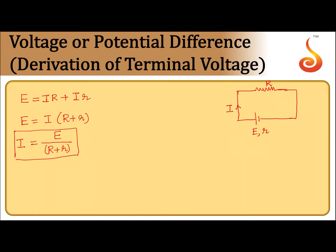If we connect a voltmeter across the cell between the two terminals, what it shows is the potential difference across the external resistance. That potential difference read by the voltmeter is called the terminal potential difference.